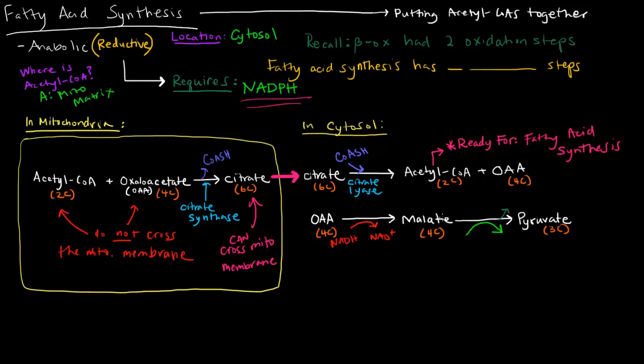Once we have malate, malate can become pyruvate by losing a carbon dioxide. When it's converted to pyruvate, it's being oxidized, and when it's being oxidized, we're creating a reducing agent. In this case, we're going to create NADPH. This is going to be important for fatty acid biosynthesis.